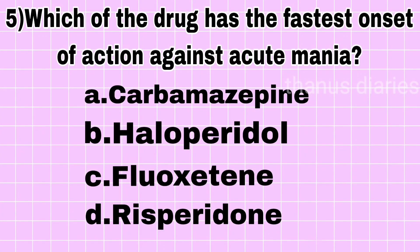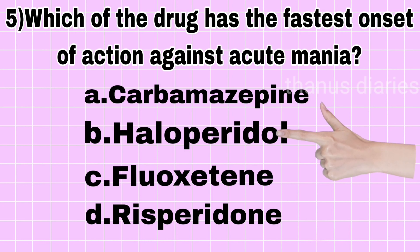Next question: which drug has the fastest onset of action against acute mania? Carbamazepine, Haloperidol, Fluoxetine, or Risperidone? The answer is Haloperidol.